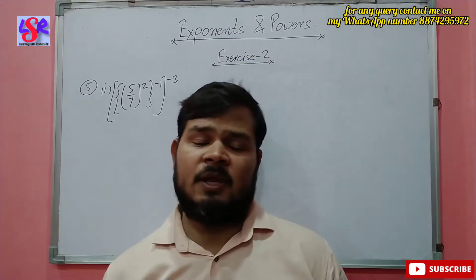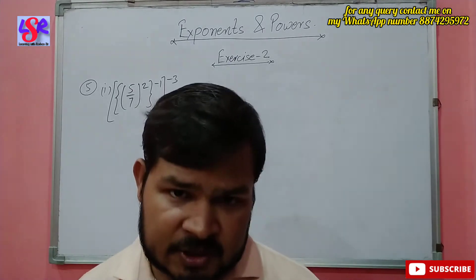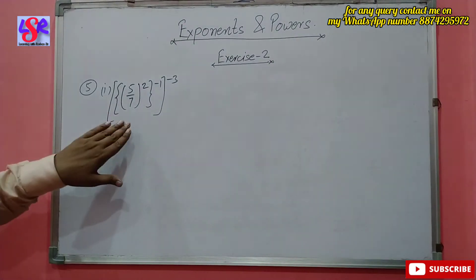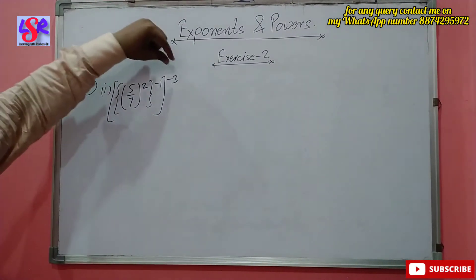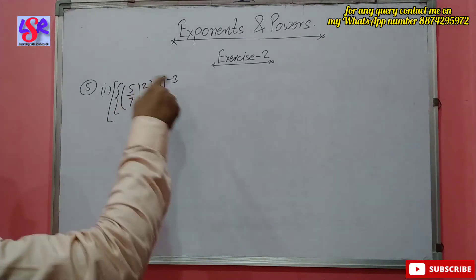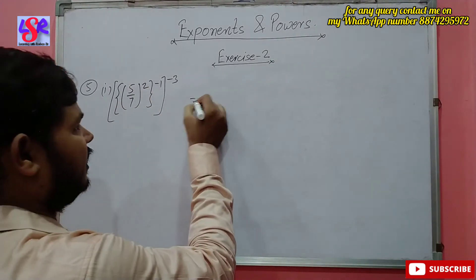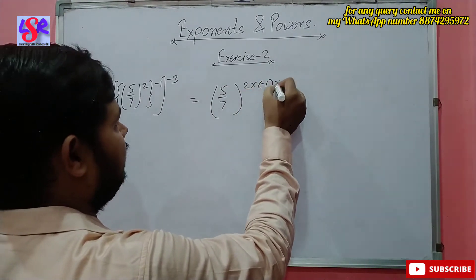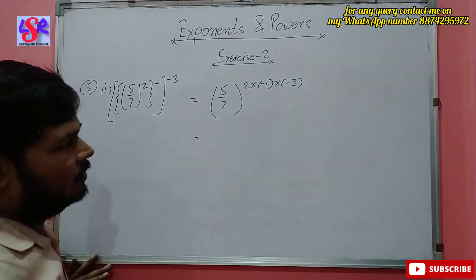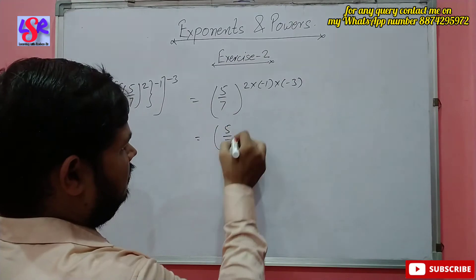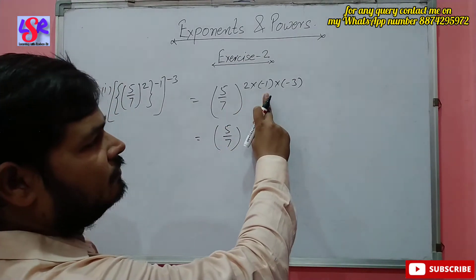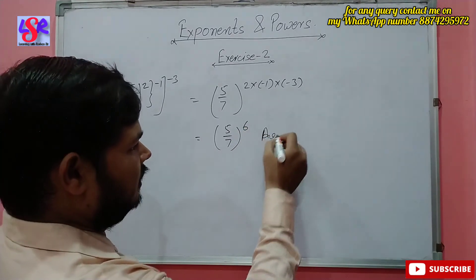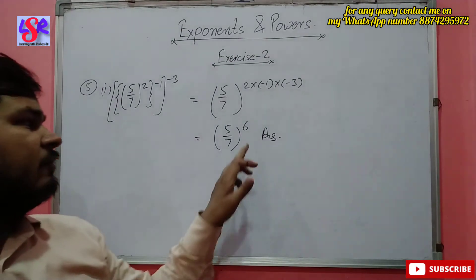Now we do question 5, where we have to simplify and represent the expression with positive exponents. The first part is 5 upon 7 to the power 2, whole to the power minus 1, whole to the power minus 3. Power on a power is multiplied, so this is 5 upon 7 to the power 2 into minus 1 into minus 3. Multiplying all the powers: 2 into minus 1 is minus 2, and minus 2 into minus 3 is 6. So the answer is 5 upon 7 to the power 6, which is already a positive exponent.